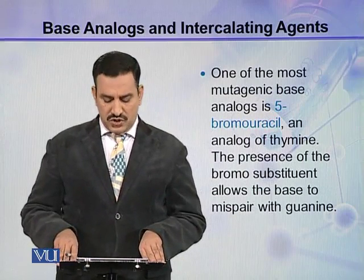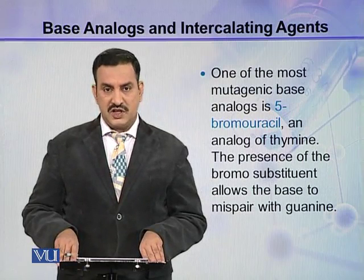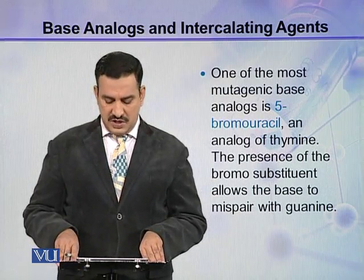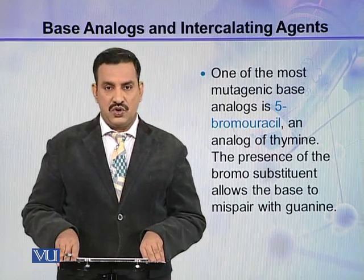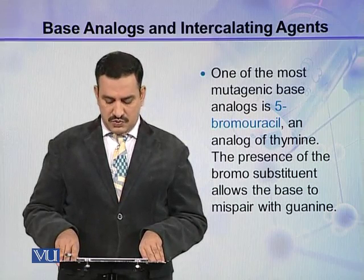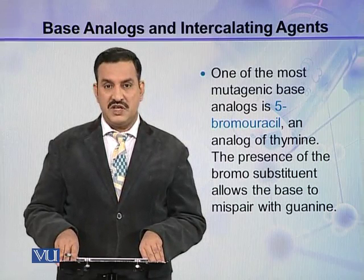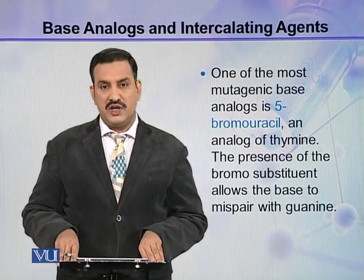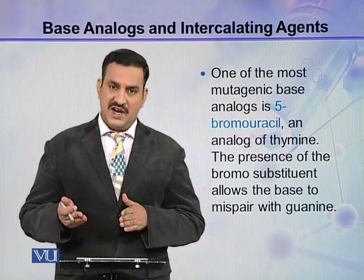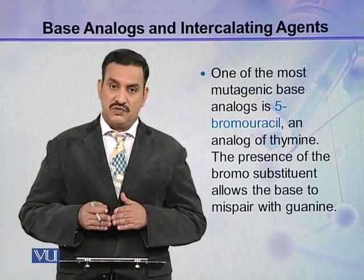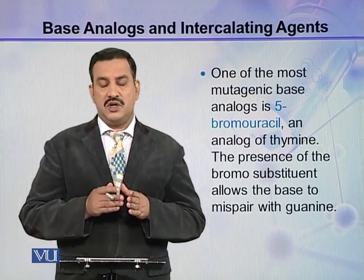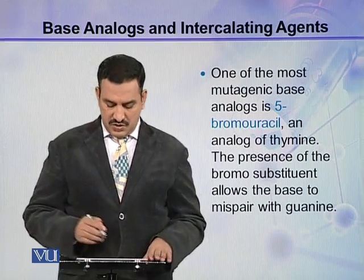One of the most mutagenic base analogues is 5-bromo-uracil, which is an analogue of thymine. The presence of the bromo substituent allows the base to mis-pair with guanine, whereas normally thymine base pairs with adenine. Due to the presence of this base analogue, it forms a base pair with guanine instead.